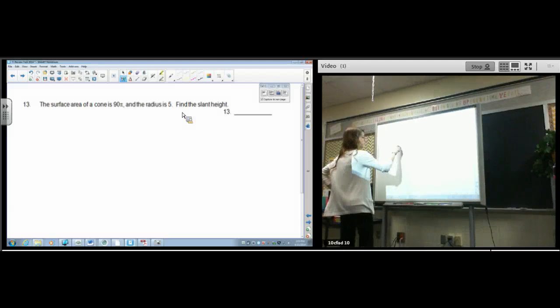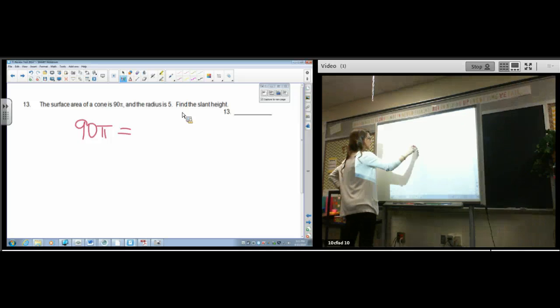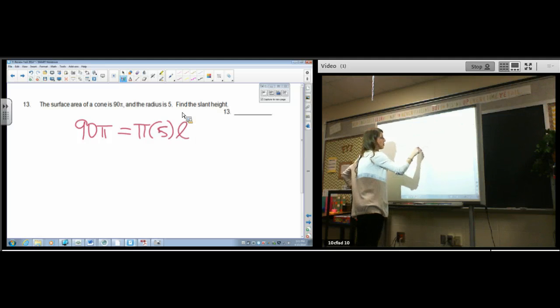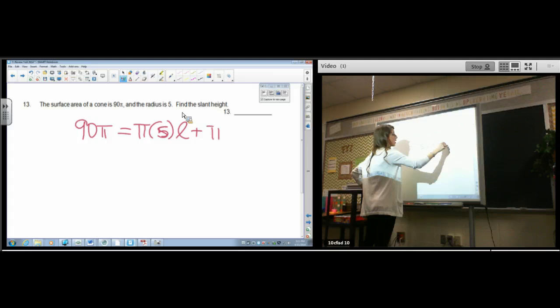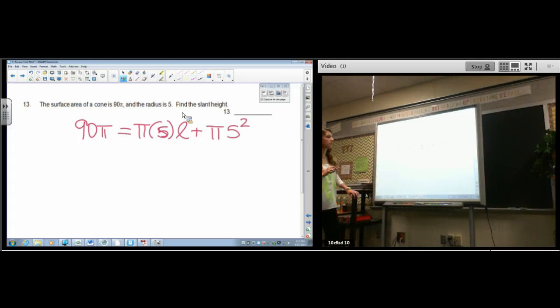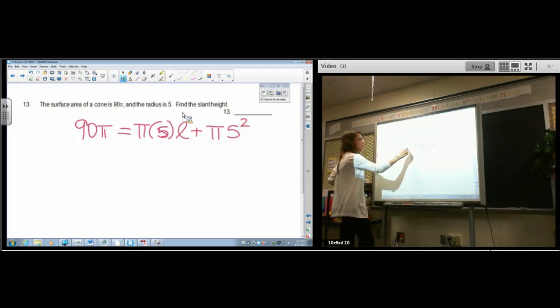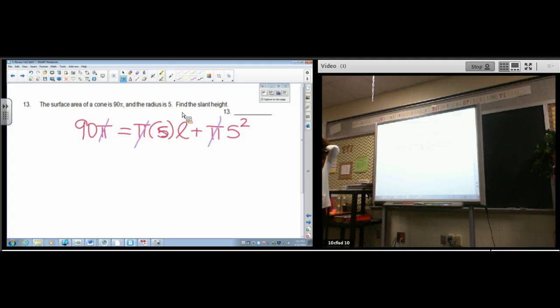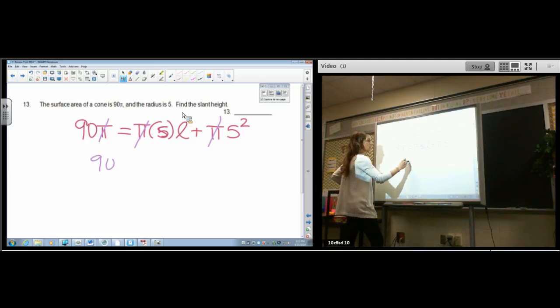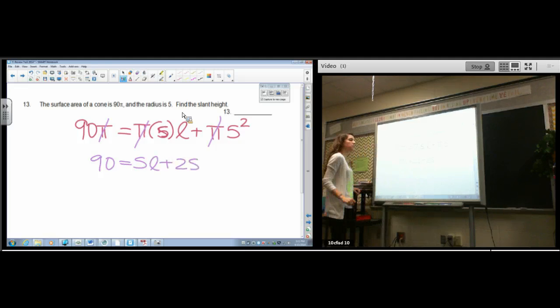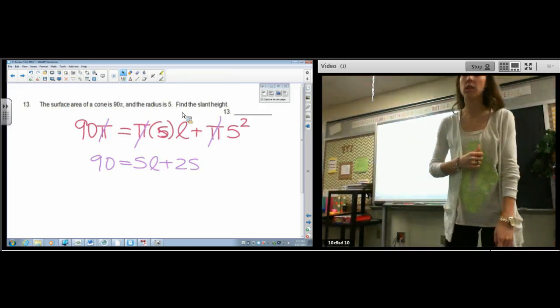Set it up to the equation, 90 pi equals pi 5 L plus pi 5 squared. So pi R L, that's a 5, pi R L plus pi R squared. Sounds fabulous. That was a good first step. And then I cancel the pi's. Good, you can do that. Every single term has a pi so it's totally legal to cancel those out because everybody had a pi. It's fair. I promise, I want to do it so much. Promise, promise, promise. Let's see what's left. 90 equals 5 L plus 25. Oh, subtract 25 to about that. Cool, very good. Very good setup.